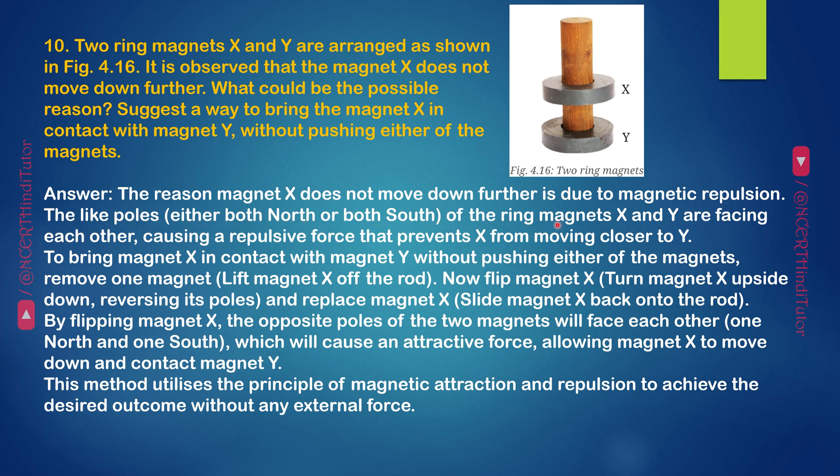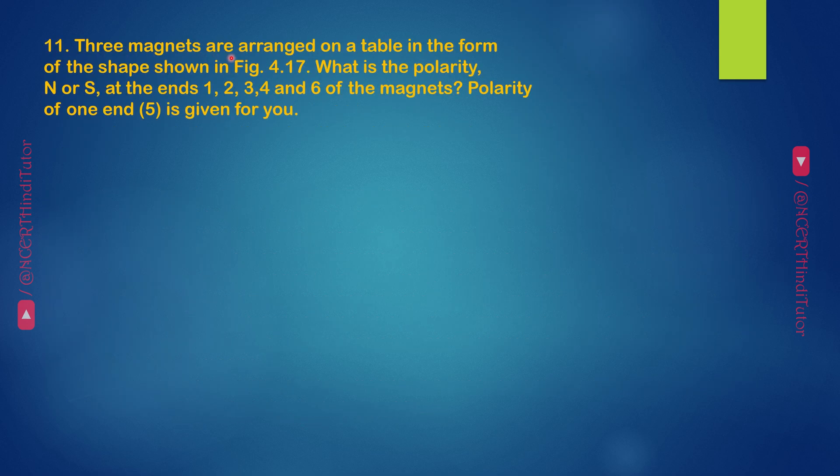Answer: The reason magnet X does not move down further is due to magnetic repulsion. The like poles, either both north or both south, of the ring magnets X and Y are facing each other causing a repulsive force that prevents X from moving closer to Y. To bring magnet X in contact with magnet Y without pushing either of the magnets, remove magnet X, lift magnet X off the rod. By flipping magnet X, the opposite poles of the two magnets will face each other, that is one north and one south, which will cause an attractive force allowing magnet X to move down and contact magnet Y. This method utilizes the principle of magnetic attraction and repulsion to achieve the desired outcome without any external force.